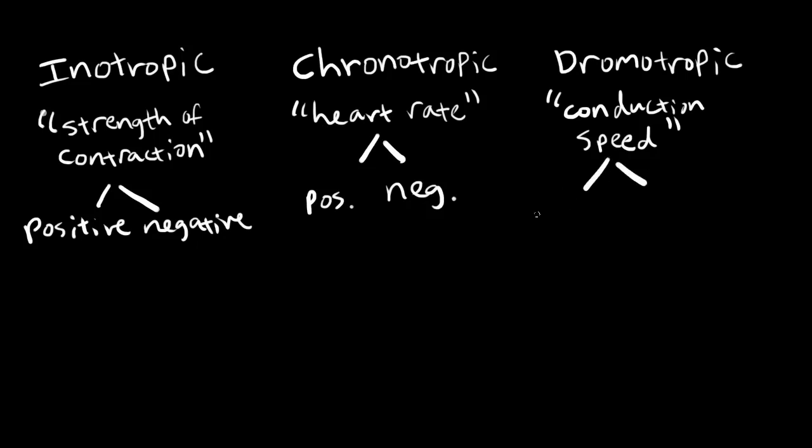Same thing here—we can have a positive or negative dromotropic effect from medications. Positive means increasing the conduction speed, and negative refers to decreasing the conduction speed of the heart.